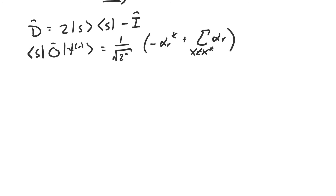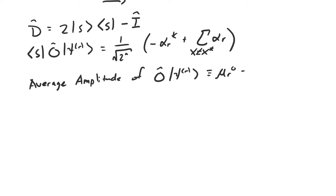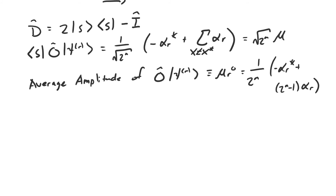Let's look at the average amplitude of the state ψ_r after it's been acted on by the oracle. It's going to be 1 over 2^n times negative α_r* (the contribution from x-star) plus 2^n minus one times α_r (from all the other basis states aside from x-star). We can see that this inner product is actually equal to √(2^n) times this average amplitude μ_r, and the projection onto the uniform superposition equals μ_r times the sum of all basis vectors.